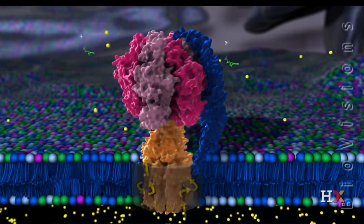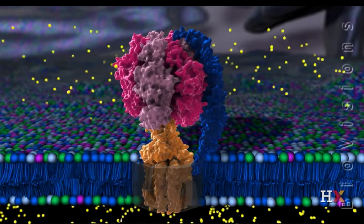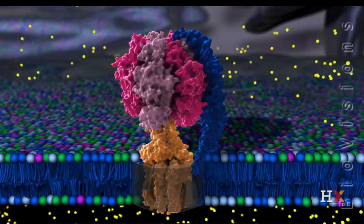If there is no proton gradient, synthase subunits stop rotating, and the cell can quickly become starved of energy and die.